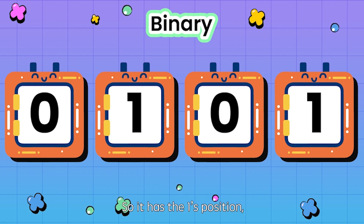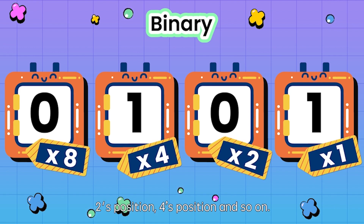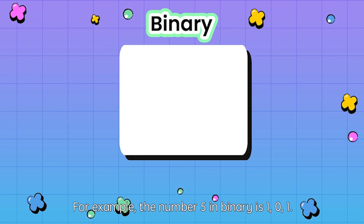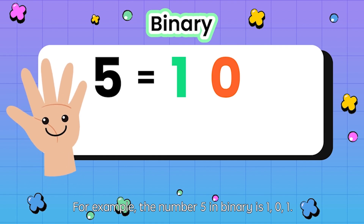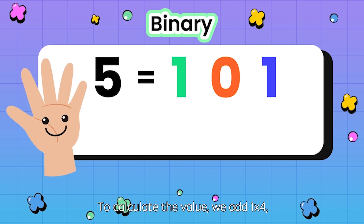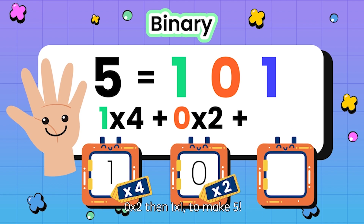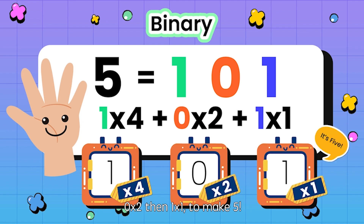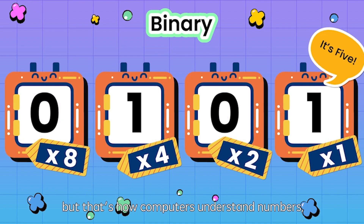So binary has the ones position, twos position, fours position, and so on. For example, the number 5 in binary is 101. To calculate the value, we add 1 times 4, 0 times 2, then 1 times 1, to make 5. It might seem funny at first, but that's how computers understand numbers, and letters as well.